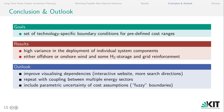To conclude the talk, let me give a brief summary and an outlook. We had the goal to find a set of technology-specific boundary conditions for predefined cost increases in order to depict the vast degrees of freedom we have when designing cost-efficient future energy systems. In the results, we have seen a very high variance and high degrees of freedom in the deployment of individual system components, both on a system level and on a country level. But we have also seen that either offshore wind or onshore wind with some hydrogen storage and some grid reinforcement is essential. What we will work on in the future is first improving the visualization of the dependencies and also looking at more search directions.